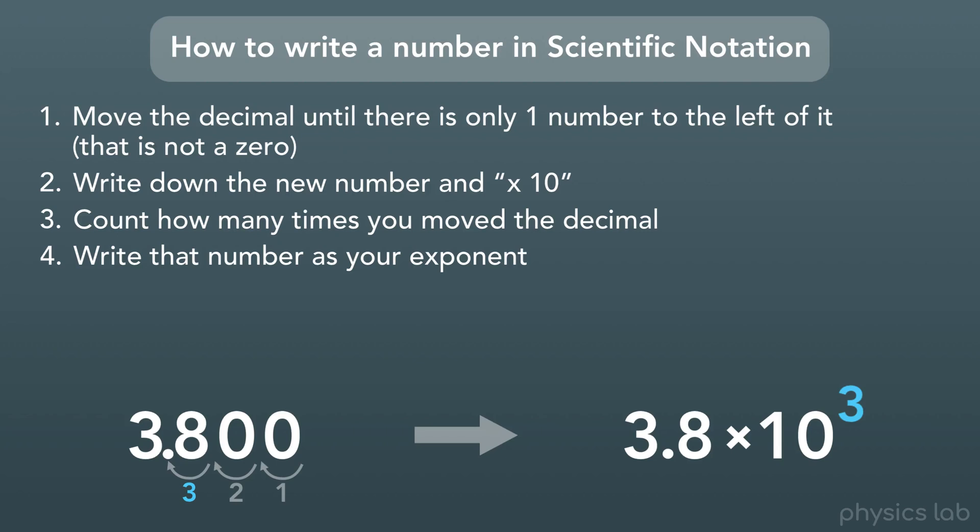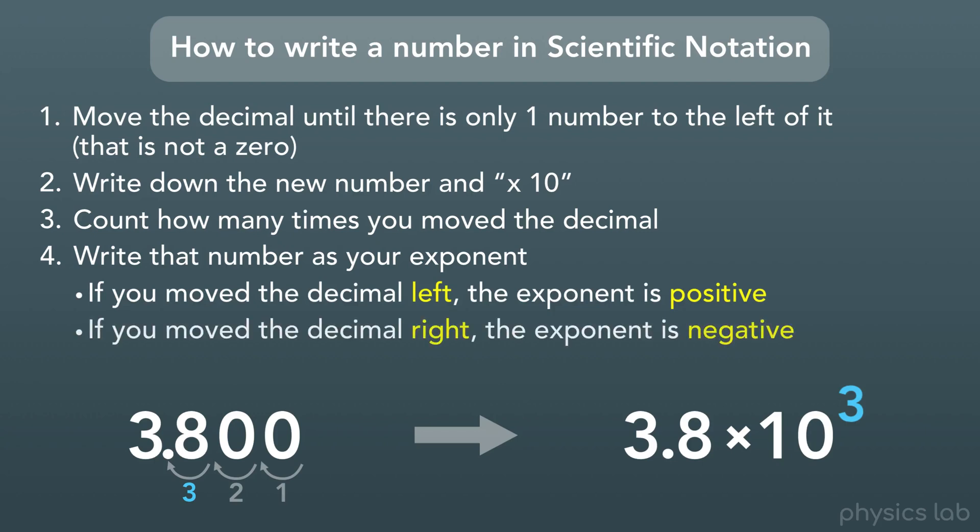So here we need to decide if the exponent is positive or negative. And here's how we know. If we move the decimal to the left, the exponent is positive. And if we move the decimal to the right, the exponent is negative. In our case, we moved the decimal to the left, so the exponent is positive three.